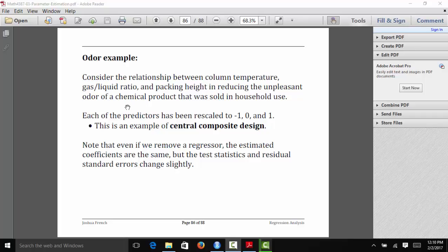Our predictor values all have been rescaled to negative 1, 0, or 1. This is an example of a central composite design. We won't talk any more about that this semester, but it's a special kind of experimental design that people use.